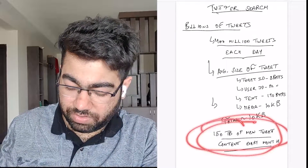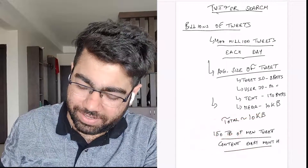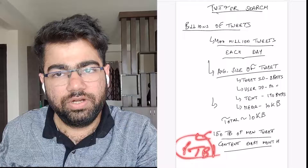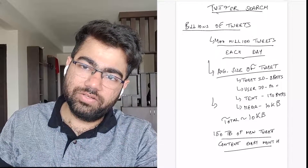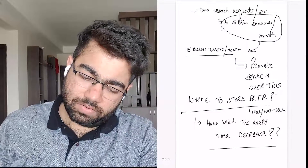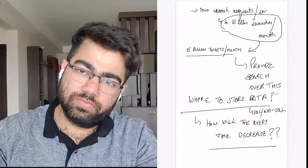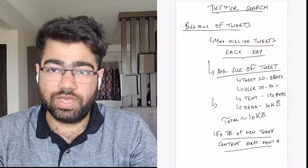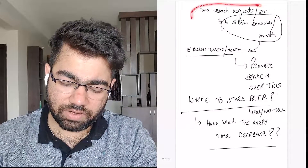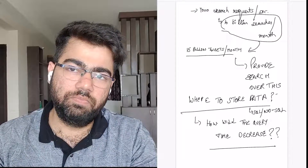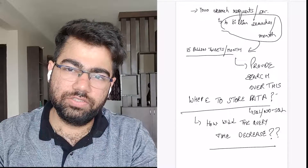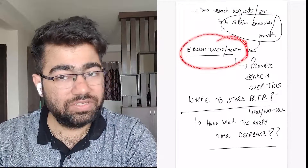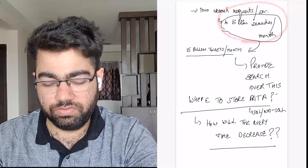So we have around 150 TB of new content created every month — and these numbers are actually very low since we're only considering 10 KB per tweet. In reality it will mostly be in petabytes or even higher. Now we're talking about search. There are around 4,000 search requests per second — that's also a very low estimate. There are 15 billion tweets per month and 10 billion searches per month, so you can see how many searches are being performed and on how much data.